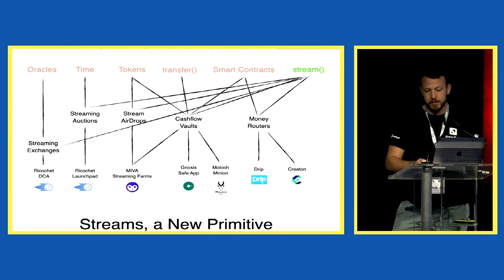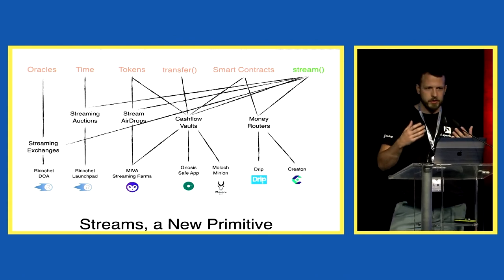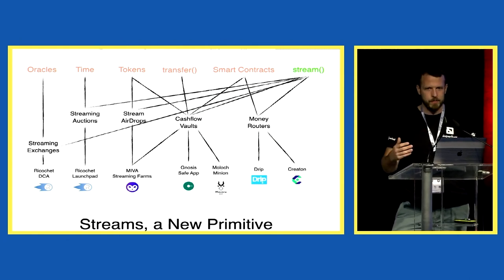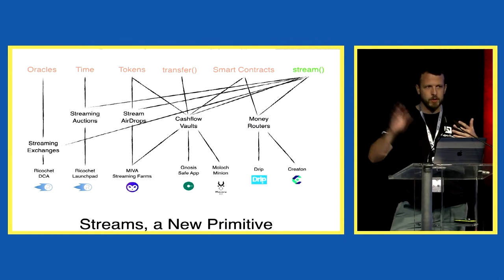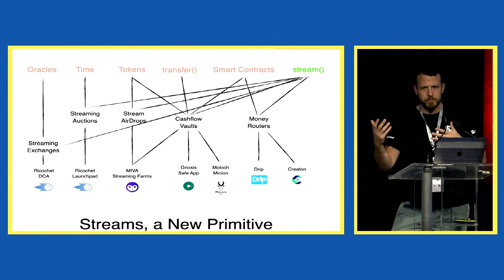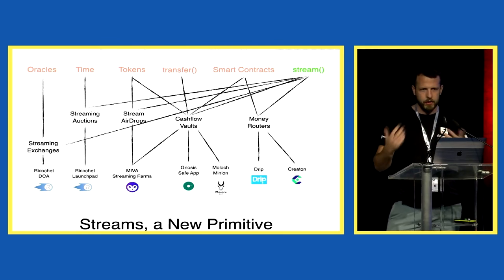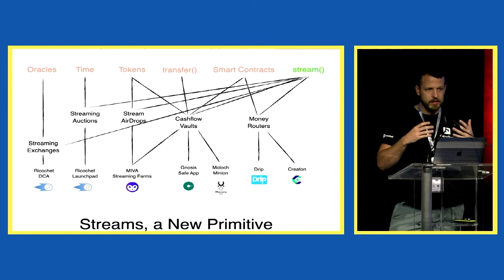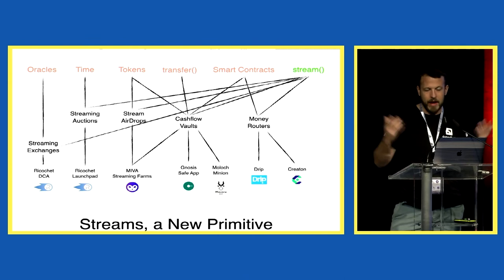Money routers are, so far, the newest thing we've seen. Money routers are smart contracts that don't have a balance — all they do is receive funds every second and send those funds to someone else every second. They're like an intermediary with logic applied to a cash flow. This is actually a very powerful and original primitive — it can move huge amounts of money, potentially, without ever holding any of it. It's simply a pass-through for your cash flows, and I find that extremely fascinating.